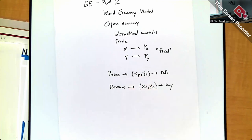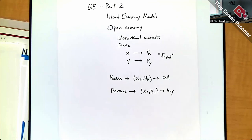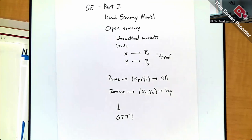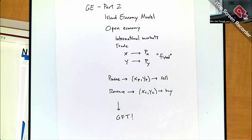The two — production and consumption — can be different. In the closed economy, the country had to pick a consumption basket on the PPF. Once you have access to international markets, you're able to lift yourself off that PPF and pick a basket that otherwise would not be feasible, generating gains that make you better off than if you kept the economy closed.